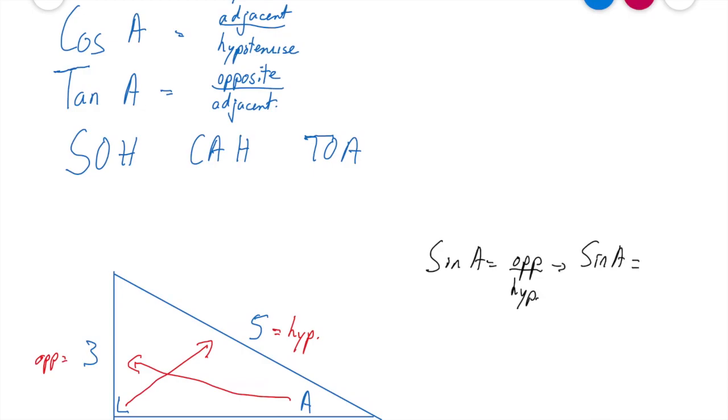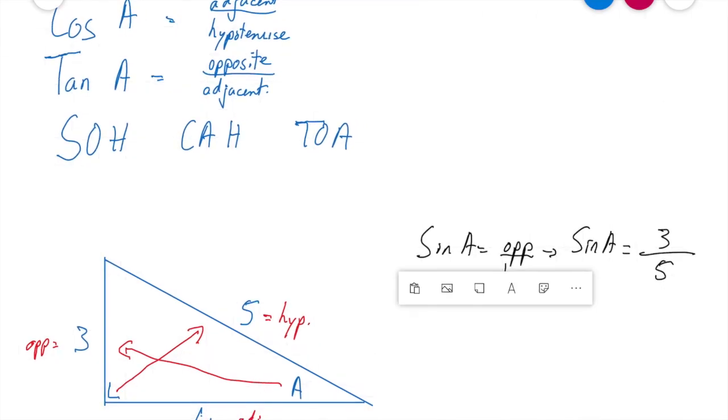So what is it going to be? Well, sin A then is going to be, what's my opposite? Well, as you can see there, it's 3. So I'm going to write in 3, and a pen maybe would be helpful. There we go. And my hypotenuse, well, you can see there is 5. So the answer is 3 over 5.